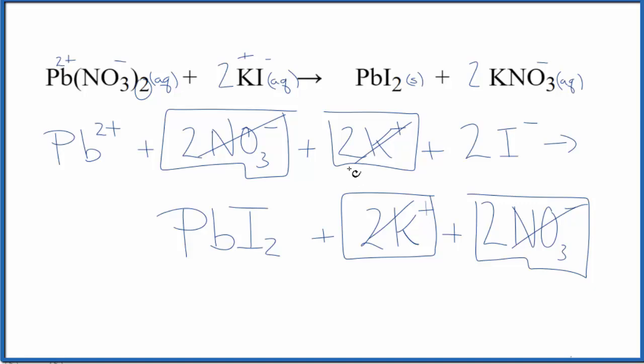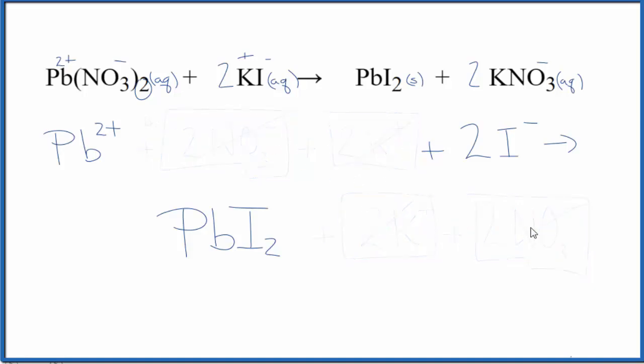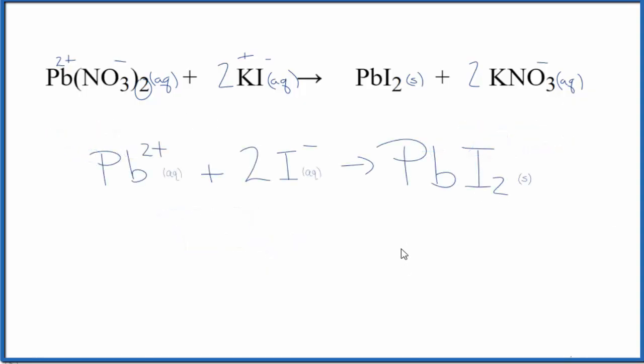If I want the net ionic equation, I just remove these right in the states, clean it up a bit, and with those spectator ions removed, I only have what changed in the chemical reaction. And what's nice is you can check if you're right. You have two plus and then two times one minus. Two plus and two minus, that adds up to zero. This is a neutral compound, so its charge all adds up to zero. If you count the atoms up, they're balanced. That's a good way to check. So we found the spectator ions, we crossed them out, and we were left with the net ionic equation.